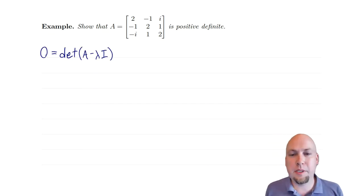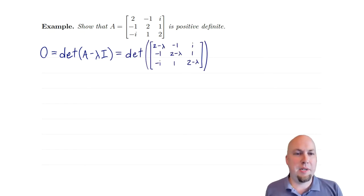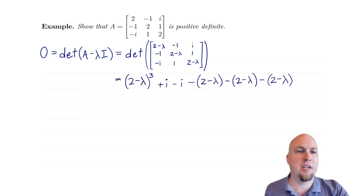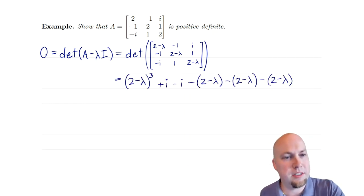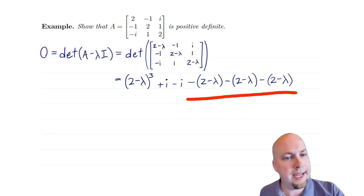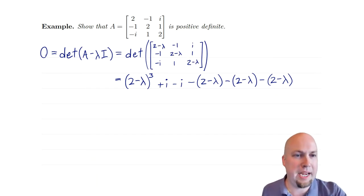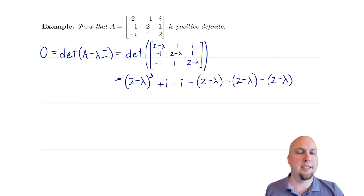Let's compute the characteristic polynomial and set it equal to zero. So determinant of A minus λI — subtract lambdas off the diagonal — and we're just going to use our explicit formula for the determinant of a 3×3 matrix. You know, this thing with three forward diagonals and then subtracting off three backward diagonals, and it ends up looking like this. For example, the main forward diagonal (2−λ)(2−λ)(2−λ) gives you the term (2−λ)³.